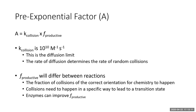When collisions happen, they have to be in a specific orientation or position for the reaction to actually occur. For example, two reactants might have a surface where only maybe five percent is conducive to reactions. The f-productive factor takes into account what orientation the collision has to be for that reaction to occur. Enzymes can improve the fraction of productive collisions.